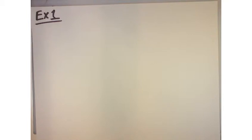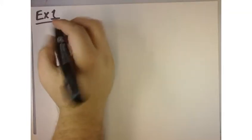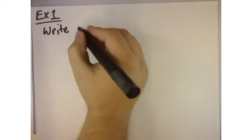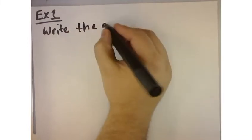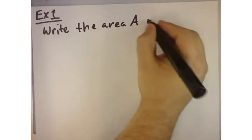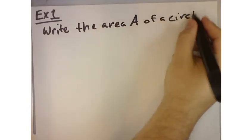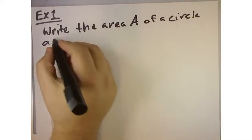Example number one out of your textbook. So, example number one wants us to find or write an equation for the area of a circle. And there's a couple different ways they want us to write it.